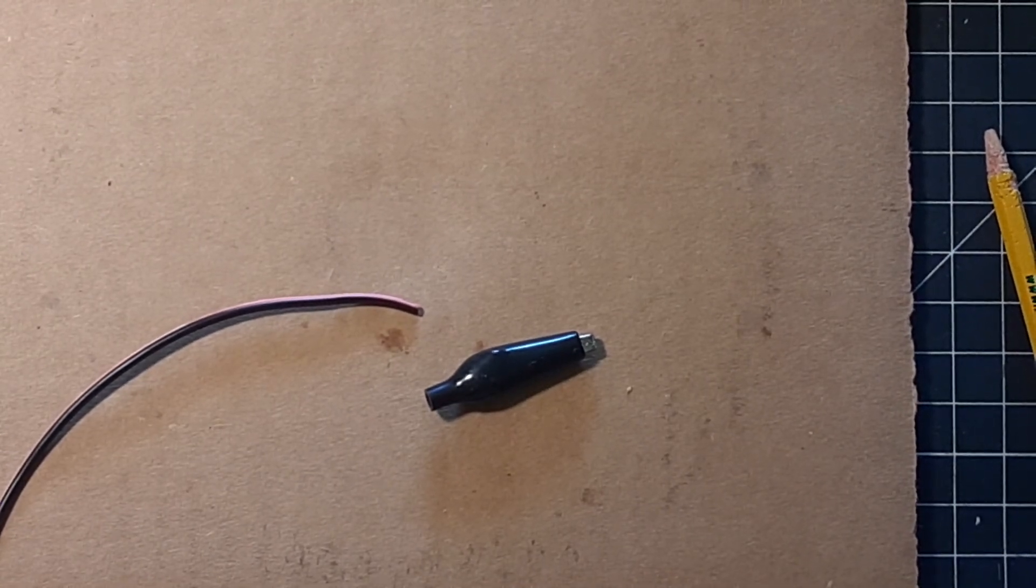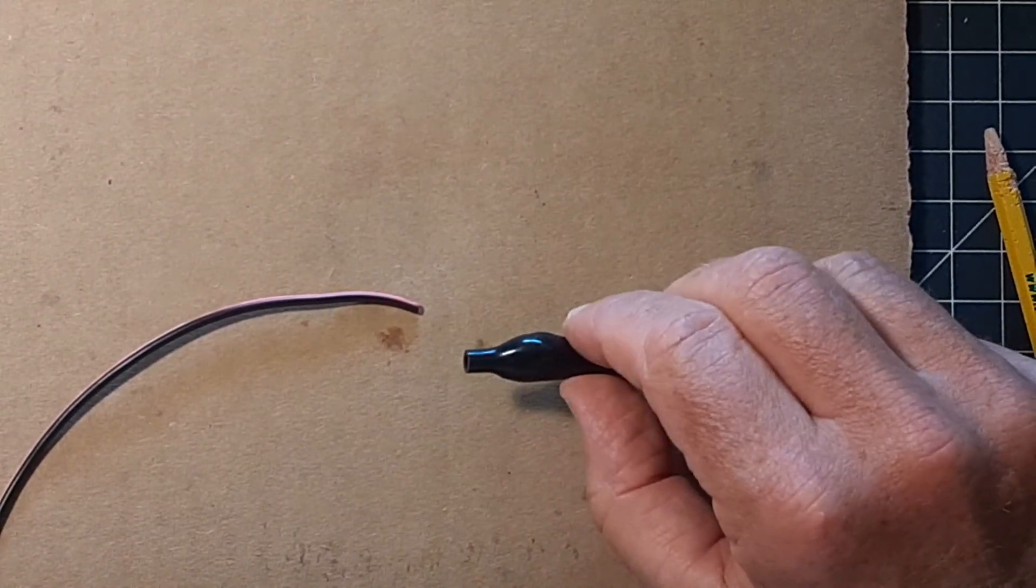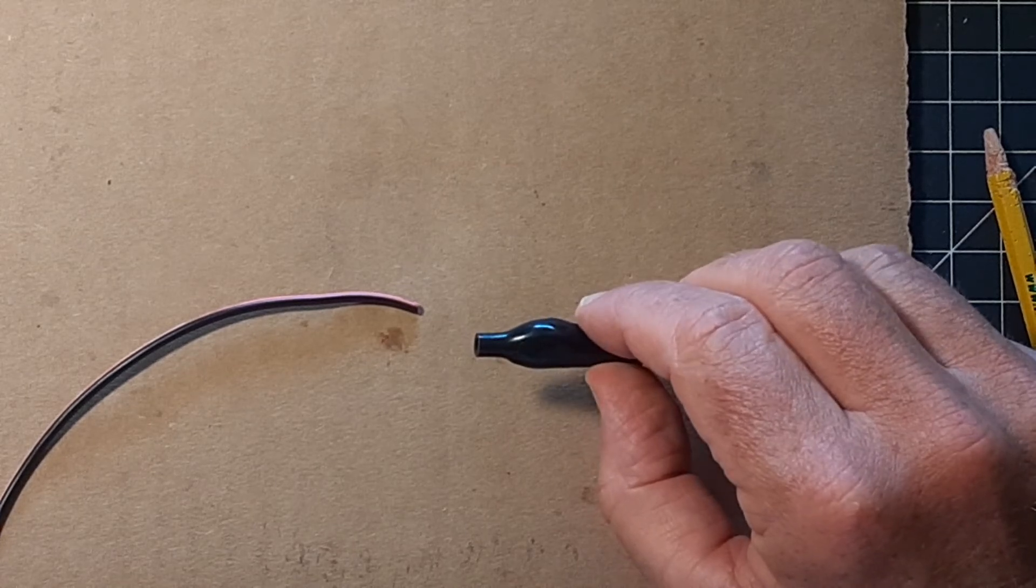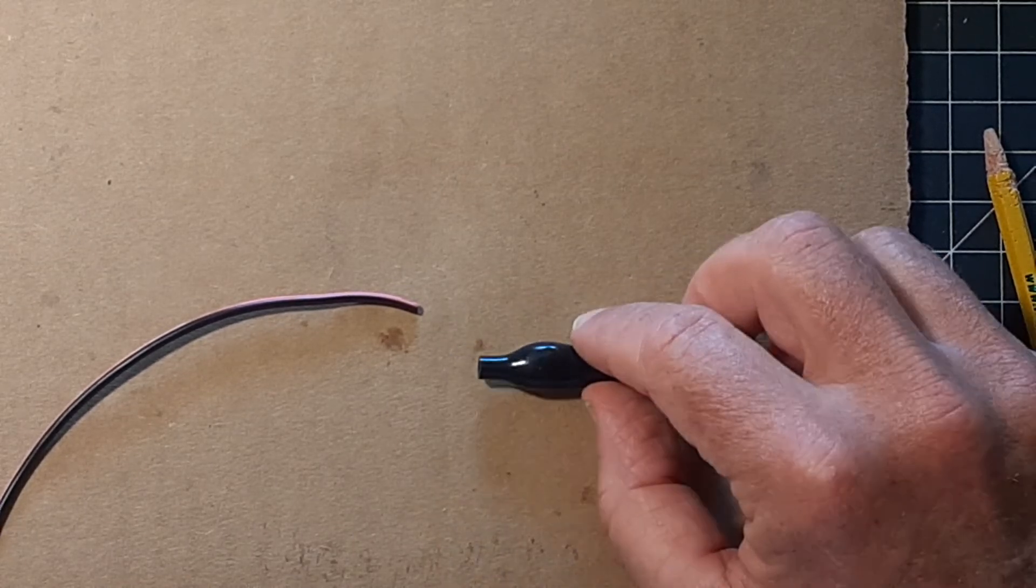In this situation we have a new alligator clip with insulation on it and we're going to attach it to a piece of wire.